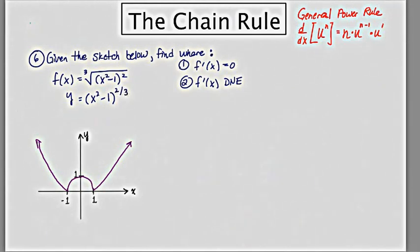We're going to use fractional exponents, and now I'm ready to use the chain rule to find the derivative. So, the derivative is going to be 2 thirds x squared minus 1, reduce the power by 1 to negative 1 third, and then multiply by the derivative of the inside, which is 2x.